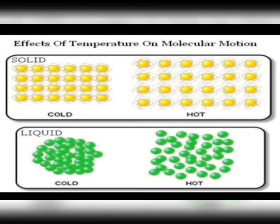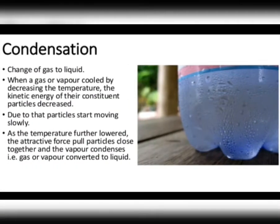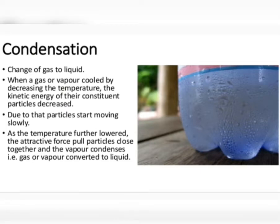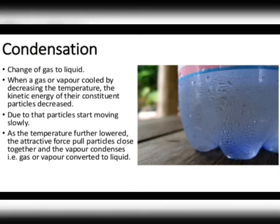Now let's talk about how we can convert a gas to a liquid. If we cool down steam — if we cool water vapors by lowering the temperature — it gets converted into liquid water. So in this case a gas or steam changes into a liquid. The process of changing a gas or vapor to a liquid by cooling, by lowering the temperature, is called condensation.